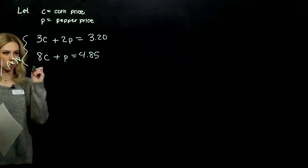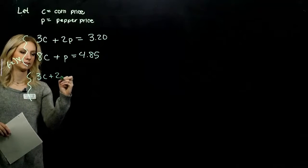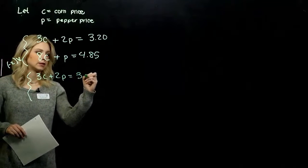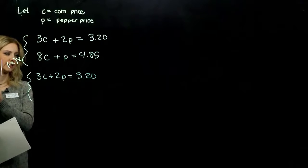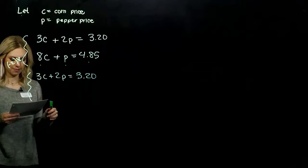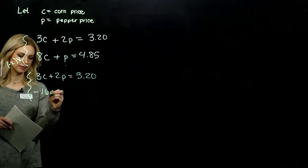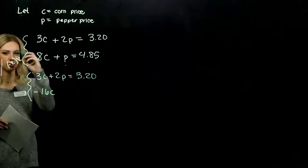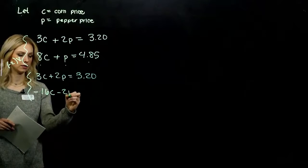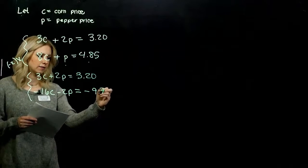So what is going to be the easiest variable to eliminate? C or P? The LCD between these two is two. So we just have to alter the bottom equation by a factor of negative two. We didn't change the first one, so it's still 3c + 2p = 3.20.